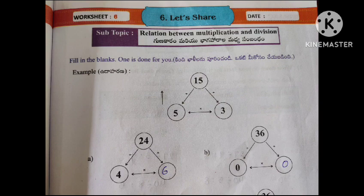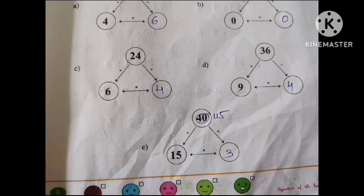15 divided by 3 equals 5. This equals 5. This equals 40. This equals 45. This equals 45.